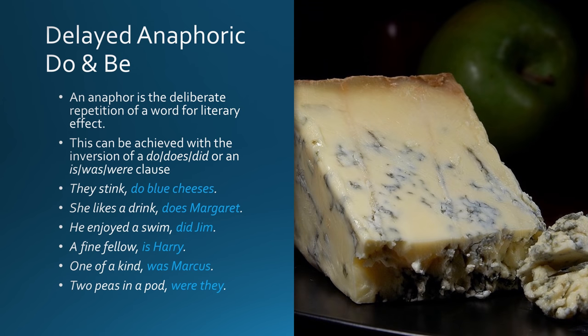Delayed anaphoric do and be. An anaphor is the deliberate repetition of a word for literary effect. This can be achieved with the inversion of a do/does/did or an is/was/were clause. For example: 'She likes a drink, does Margaret.' 'He enjoyed a swim, did Jim.' 'A fine fellow is Harry.' 'One of a kind was Marcus.' 'Two peas in a pod were they.'